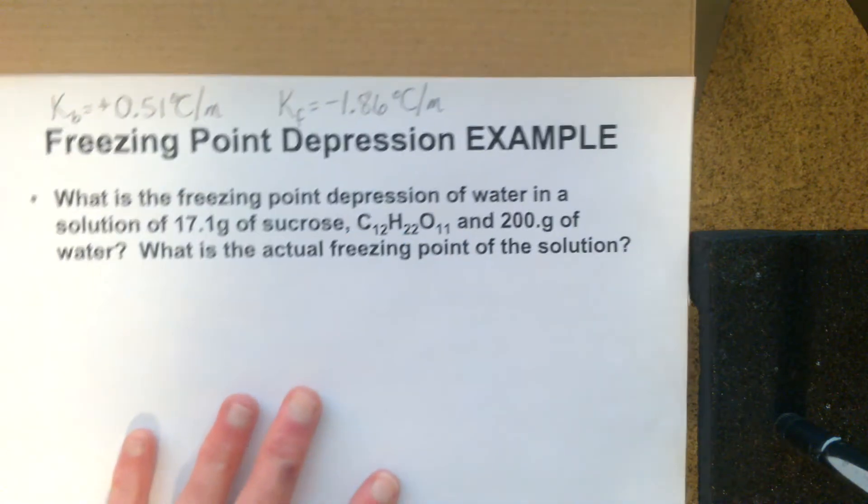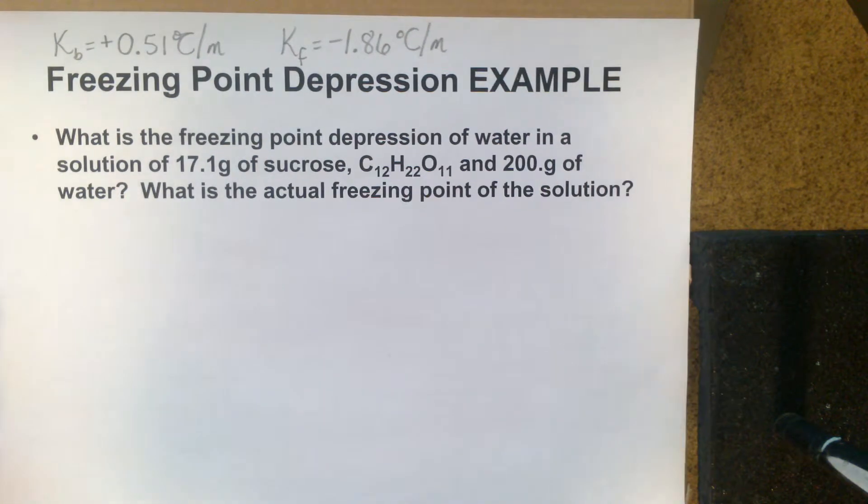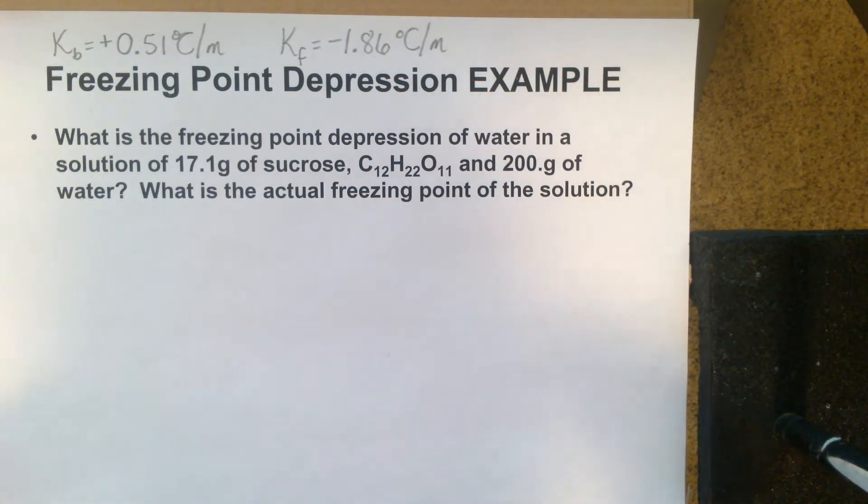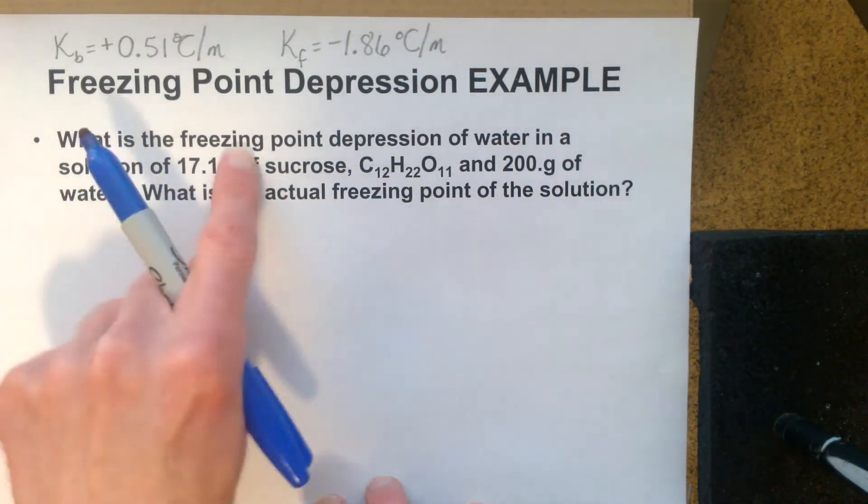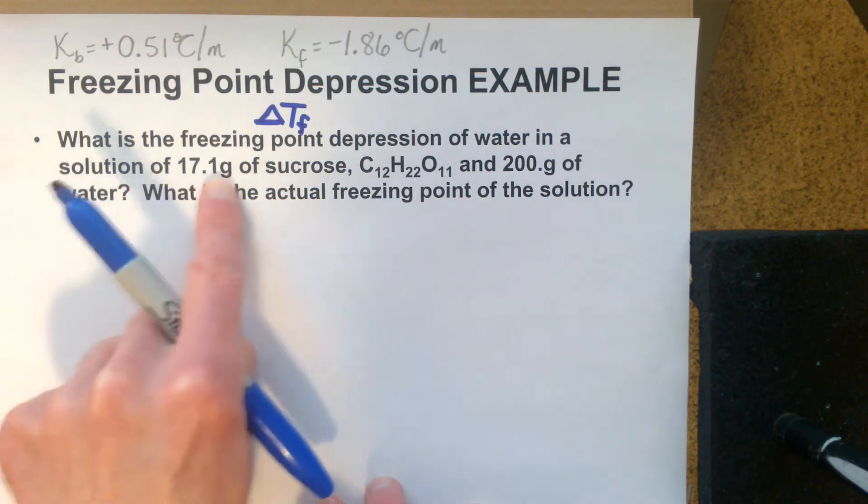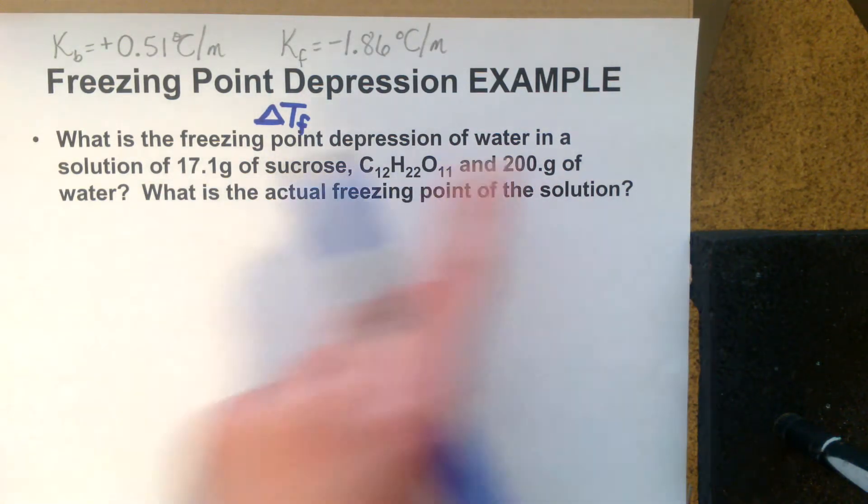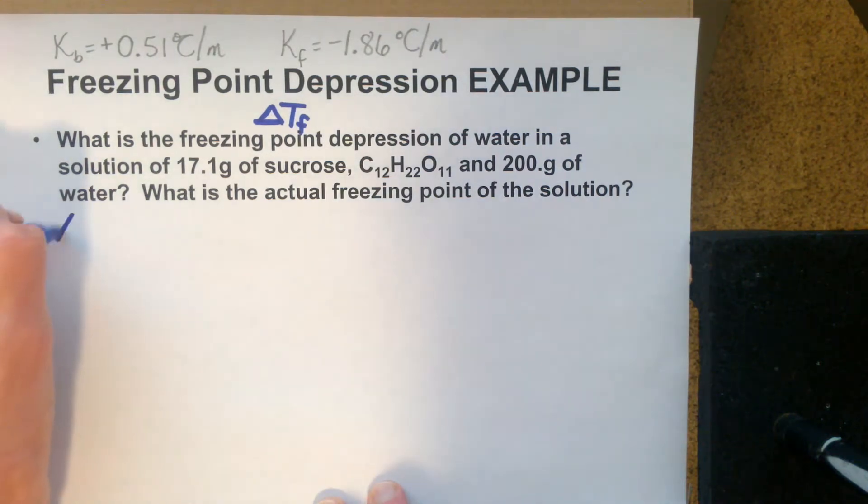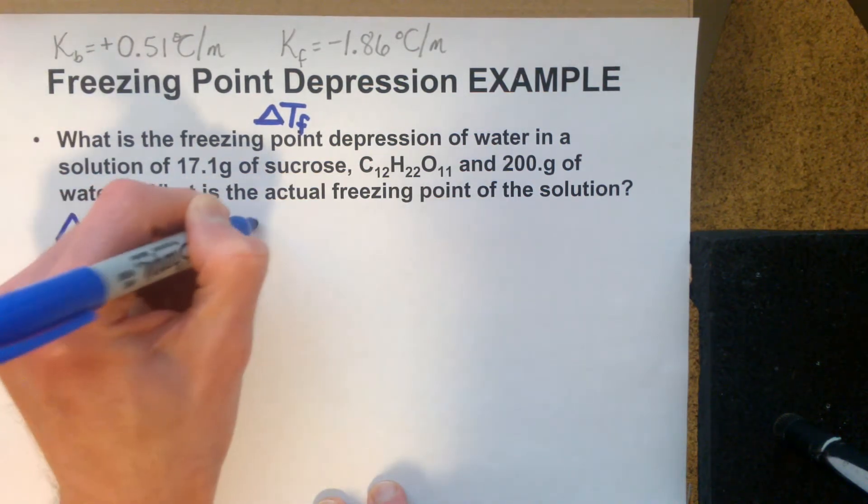Let's try a second example. This time let's look at freezing point depression. Freezing point goes down. Notice that the Kf value up here is negative 1.86. That's because freezing points go lower while boiling points elevate with the introduction of a solute into that solvent. Let's solve this one. What is the freezing point depression, delta Tf, of water in a solution of 17.1 grams of sucrose and 200 grams of water? First thing, let's write our formula: delta Tf equals Kf times the molality times the Van't Hoff factor.